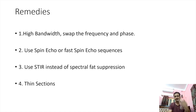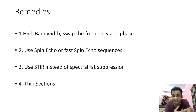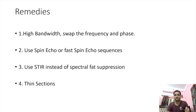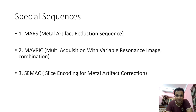Remedies to keep in mind: high bandwidth helps reduce artifacts; swapping the frequency encoding and phase encoding directions is helpful. Use SPIR or fast spin-echo instead of GRE sequences to reduce artifacts. Use STIR instead of spectral fat suppression, as spectral fat suppression causes lack of homogeneity with metallic prostheses. Thin sections also help.